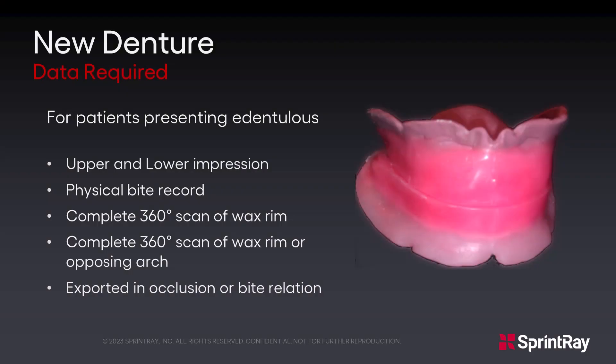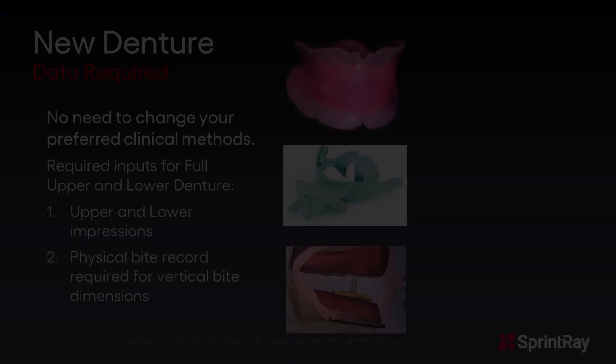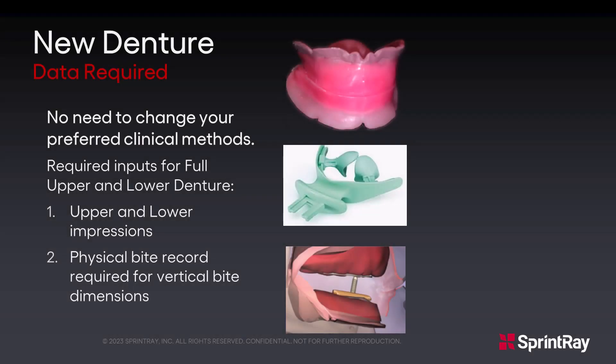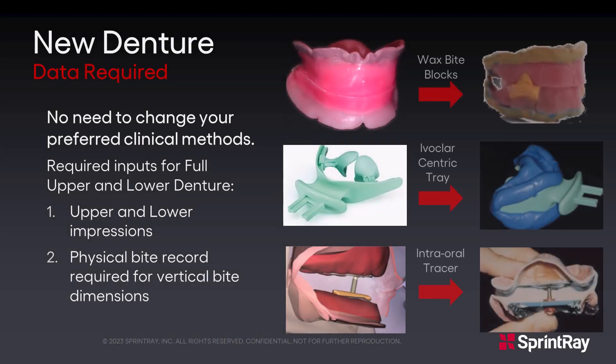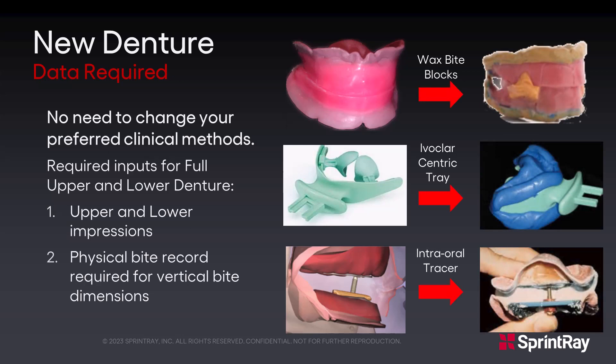A new denture is for patients presenting edentulous that do not have an existing denture. Upper and lower impressions will be performed, and then scans of those impressions will be taken. A physical bite record will be required for vertical bite dimensions using the provider's preferred method. We will then be taking a complete 360-degree scan of the wax rim, and then a complete 360-degree scan of the opposing arch or wax rim as well. Those will then be exported in bite relation. For new dentures, there is no need to change your preferred clinical method for capturing the upper and lower impressions or the physical bite record. You can use the method you are most comfortable with.